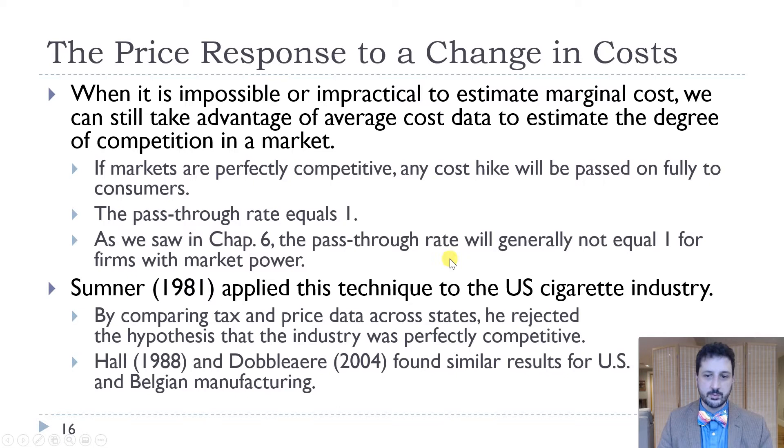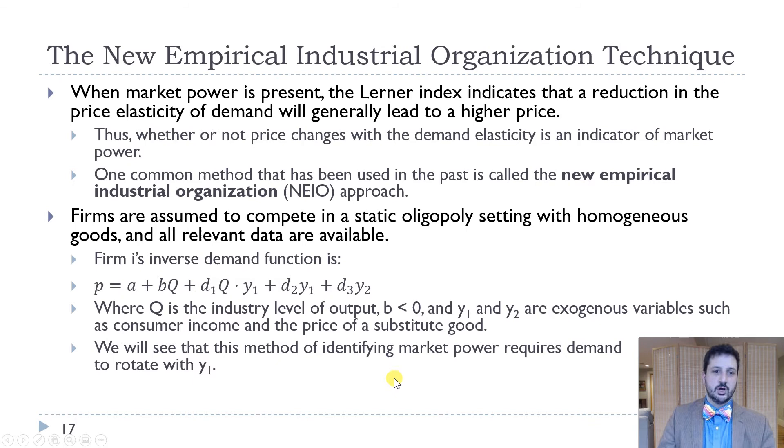Sumner did this for the cigarette industry in 1981, and not surprisingly because it was cigarettes, he rejected the hypothesis that it was perfectly competitive, which is not a big surprise. But then Hall and Dobbleaere found similar results in manufacturing in both the United States and Belgium. Basically this is just taking these presumably exogenous increases in input costs and seeing how they get translated into prices.